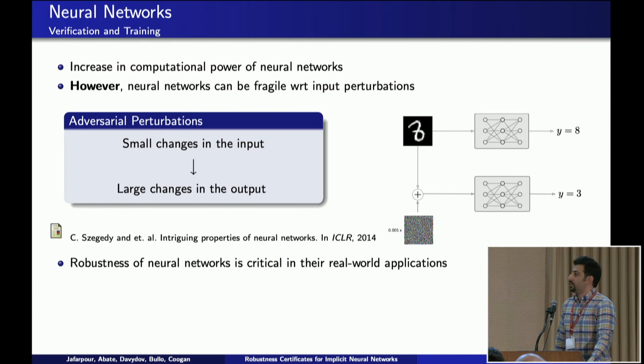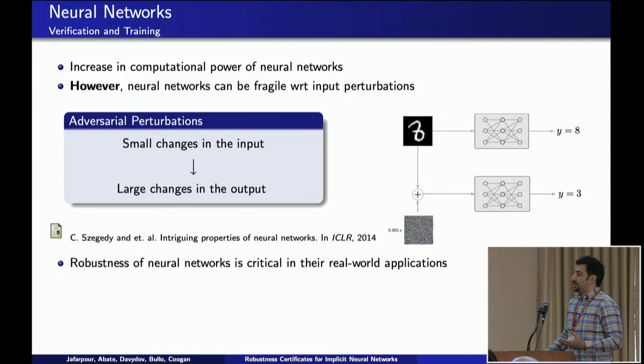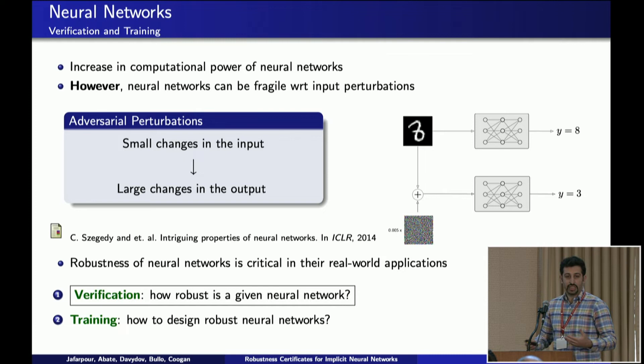Recent advances in machine learning have increased the computation power of neural networks. However, they have been shown to be fragile with respect to input perturbations. An instance of this fragility, studied extensively in the machine learning community, is adversarial perturbations — very carefully designed small perturbations in the input of neural networks that can lead to very large changes in their output. Because of this brittleness, robustness analysis is becoming more and more important. When we want to study robustness of neural networks, two questions naturally arise: robustness verification — how robust is our given neural net — and robustness training — how can we design a neural net which is robust?